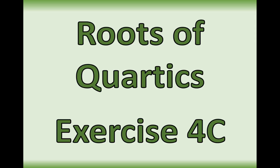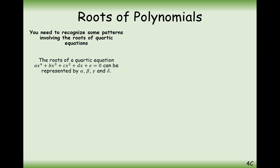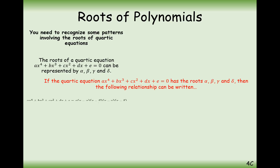We're going to be doing exactly the same in this video as in the previous two: forming equations that link the coefficients on the quartic equation with its roots. We'll write out a formula linking the coefficients of the polynomial, and given that it has roots alpha, beta, gamma and delta, we write it as a bracket (x minus alpha)(x minus beta)(x minus gamma)(x minus delta), meaning alpha, beta, gamma and delta are all roots of this quartic.